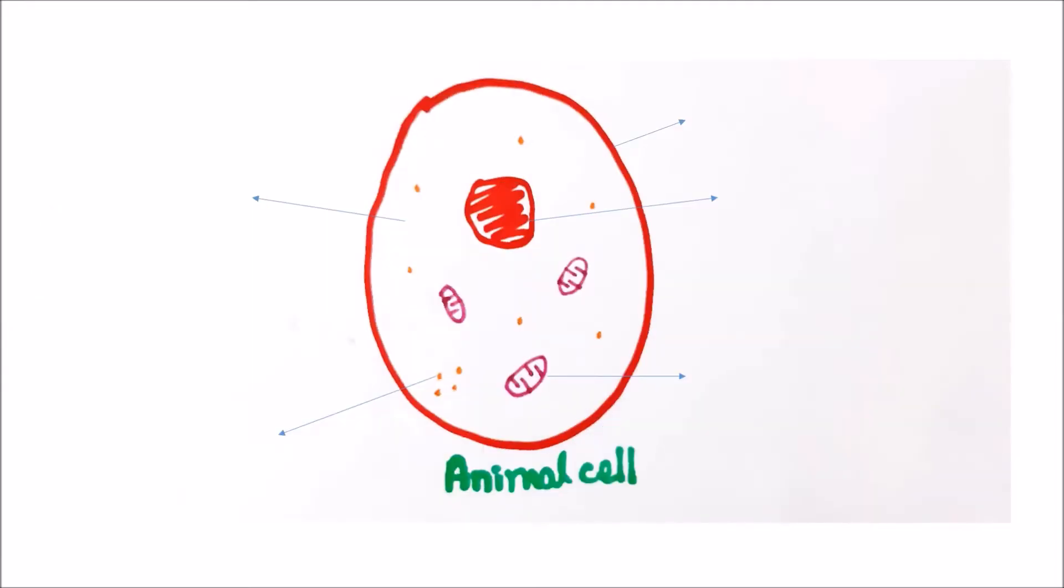Here's a simple structure of an animal cell, which shows that they consist of a nucleus, which controls cell activity and contains all genetic information, and a semi-permeable cell membrane, which encloses the cell and lets certain things into and out of the cell.